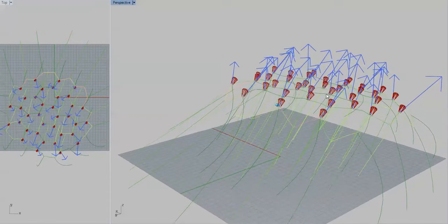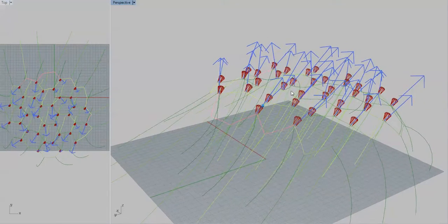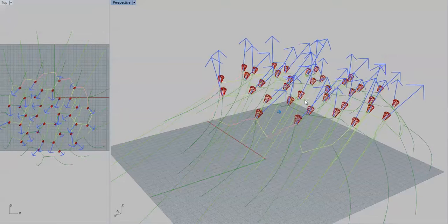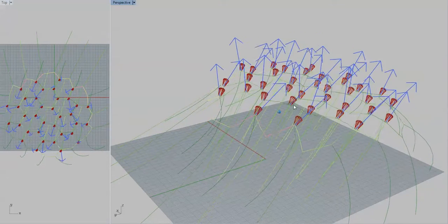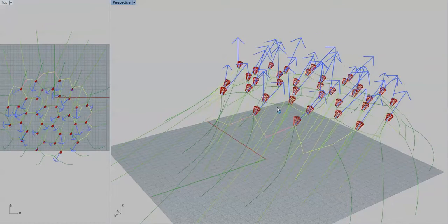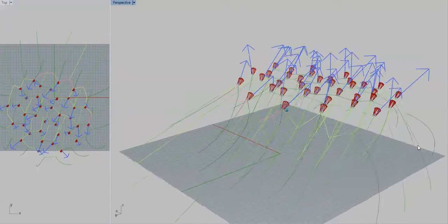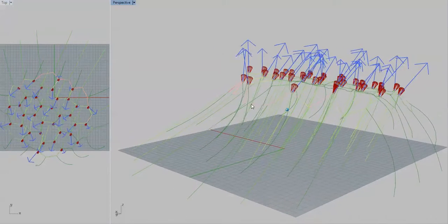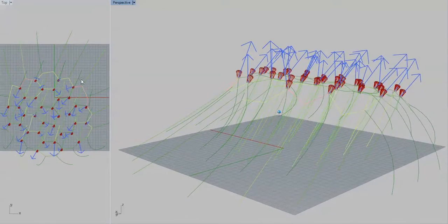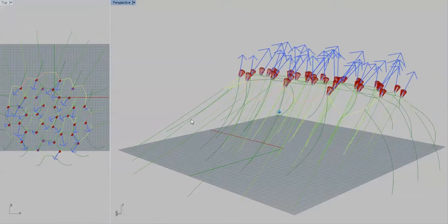You can see the top net here is very much reacting. You see the colors change. As it goes slightly more red, that's a tighter, more stretched line. Darker green is the original length. So the upwind side here, the lines have been lengthened.